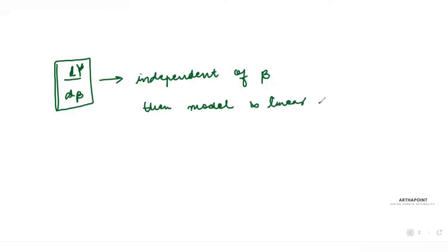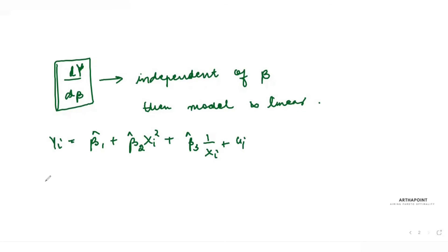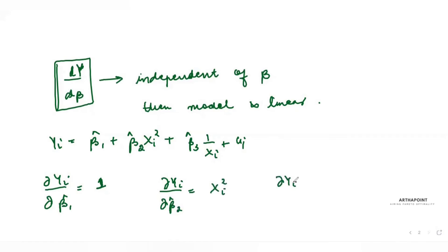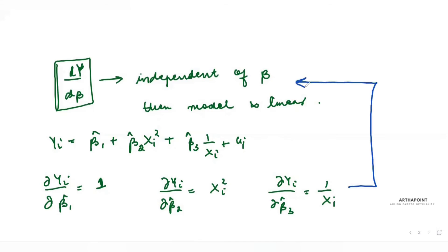Let's take the previous example: yi = β1 hat + β2 hat·xi² + β3 hat·(1/xi) + ui. dyi/dβ1 hat = 1. dyi/dβ2 hat = xi². dyi/dβ3 hat = 1/xi. Because all these derivatives are independent of the value of beta, we can say that this is in fact a linear model.